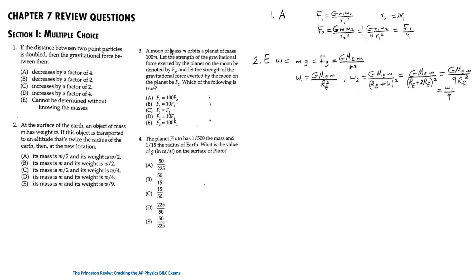For question 3: a moon of mass m orbits a planet of mass 100m. Let F1 be the gravitational force exerted by the planet on the moon, and F2 be the gravitational force exerted by the moon on the planet. The answer is C — F1 equals F2 — because by Newton's third law, these forces are an action-reaction pair, equal in magnitude but acting on different objects.